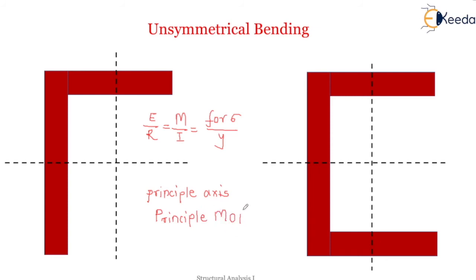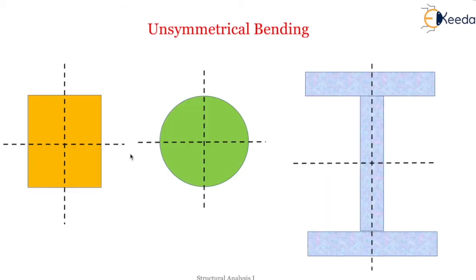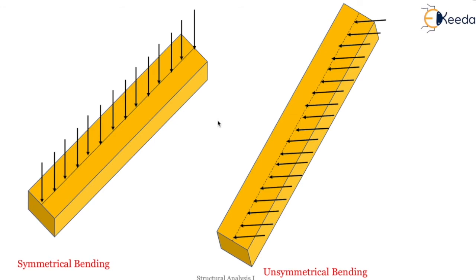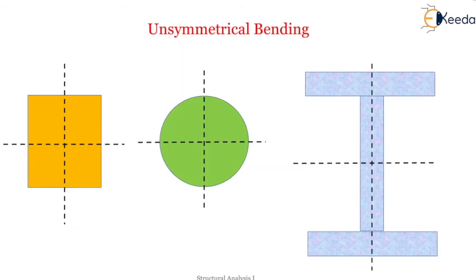If the load line acting on a beam does not coincide with one of the principal axes of the section, then bending takes place in a plane different from the plane of the principal axis. In this case, bending will be different. This is what we call unsymmetrical bending — when bending takes place in a plane different from the plane of the principal axis.